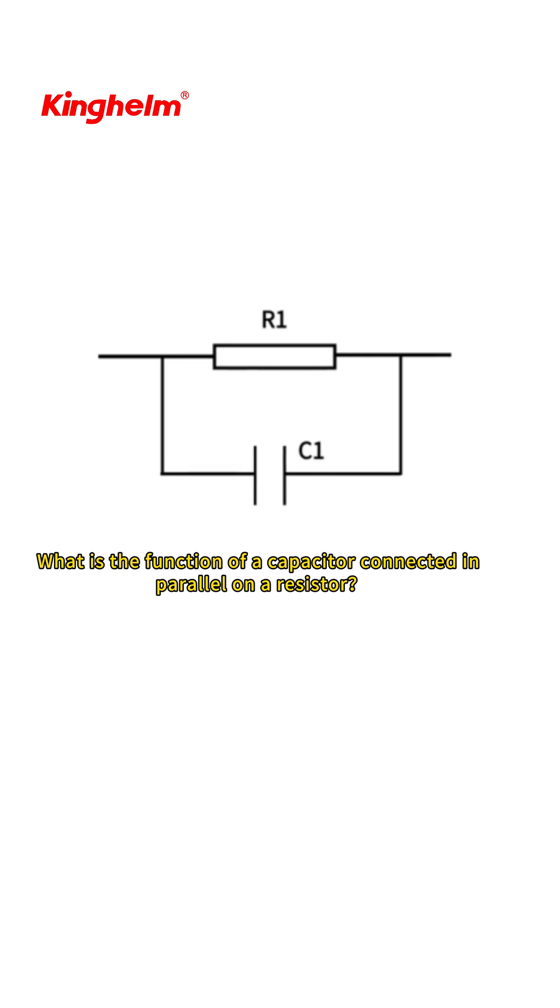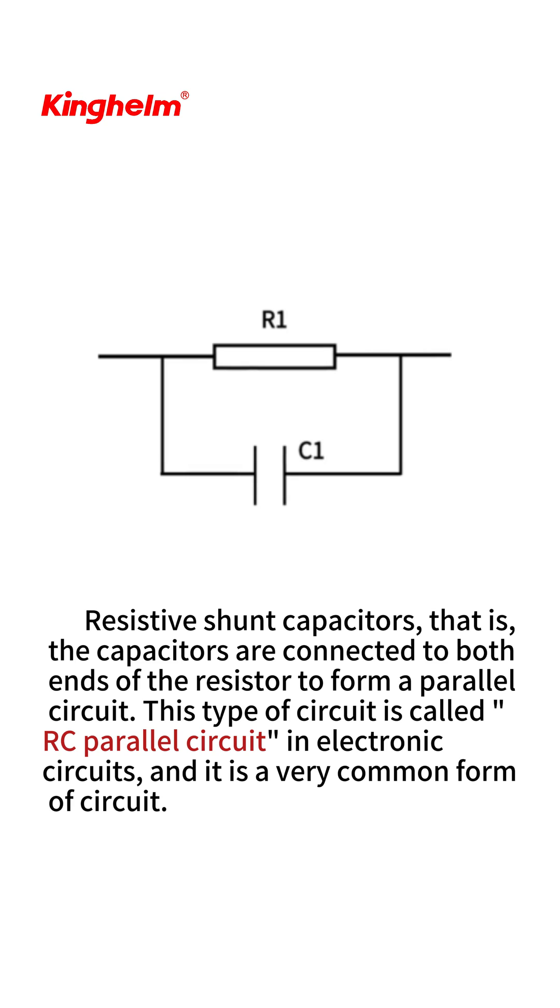What is the function of a capacitor connected in parallel on a resistor? Resistive shunt capacitors, that is, the capacitors are connected to both ends of the resistor to form a parallel circuit. This type of circuit is called an RC parallel circuit in electronic circuits, and it is a very common form of circuit.